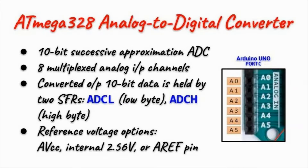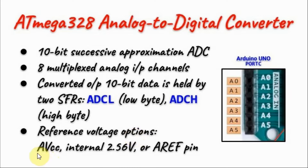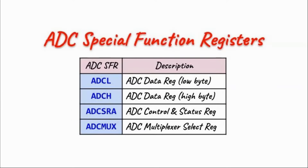The ATmega analog-to-digital converter is a 10-bit successive approximation ADC which has 8 multiplexed analog input channels. The converted 10-bit data is held by two special function registers: ADCL, which stores the low byte result, and ADCH, which stores the high byte result. There are three options for V reference: analog VCC, internal 2.5 volt reference, or the analog reference pin. There are four special function registers associated with the ADC.